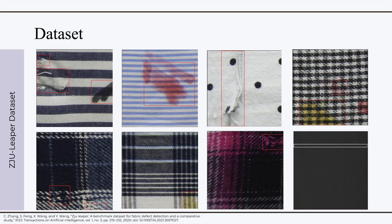The dataset used in this study is the ZJU Leaper dataset, which consists of 19 different fabric types of various patterns and textures. Some examples of the annotated defects are shown here.